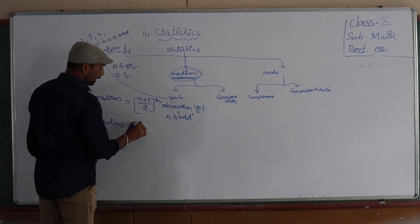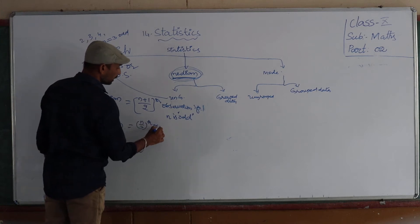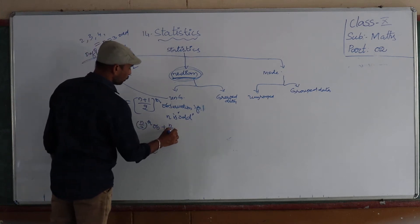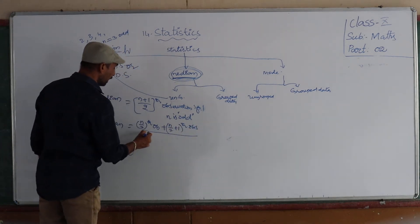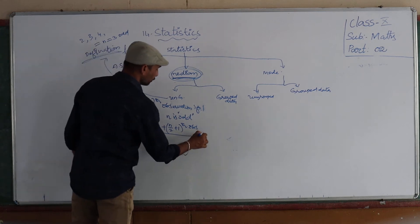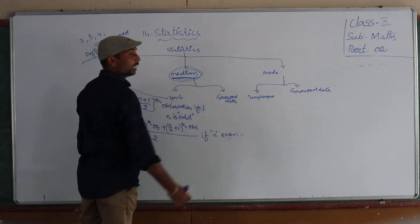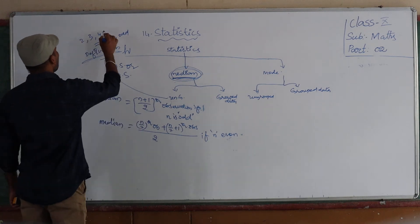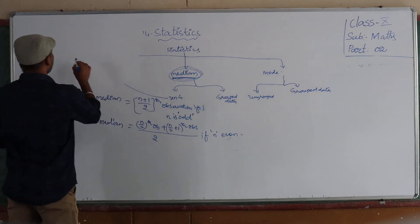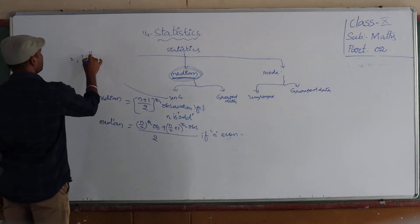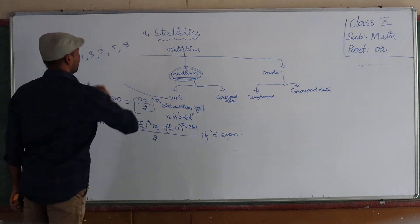For even n, the median is equal to the average of the (n/2)th observation and the (n/2 + 1)th observation, divided by 2. For example, find the median of the data: 2, 1, 3, 7, 5, 8.